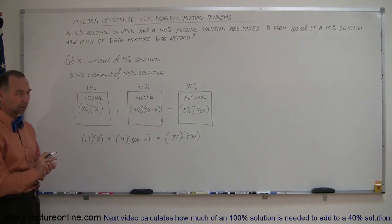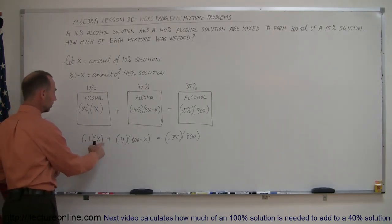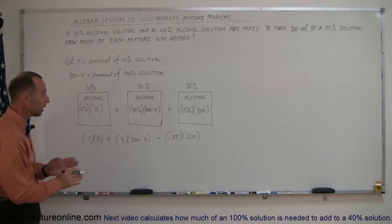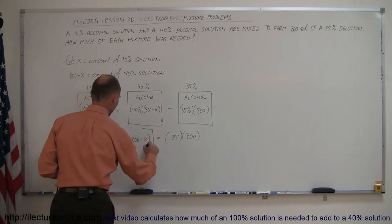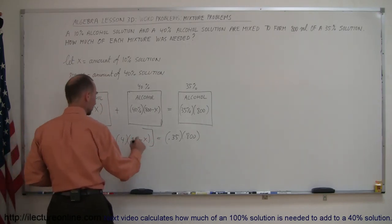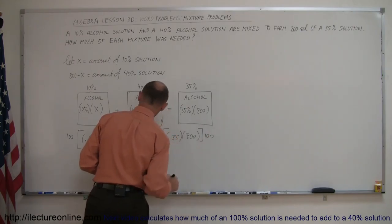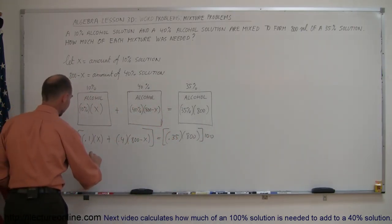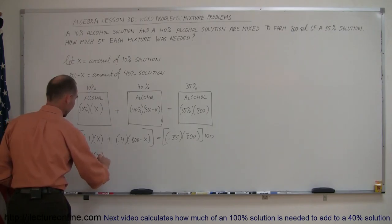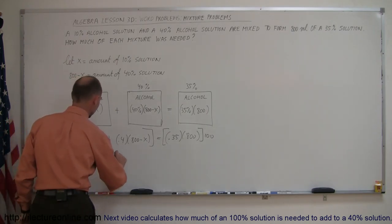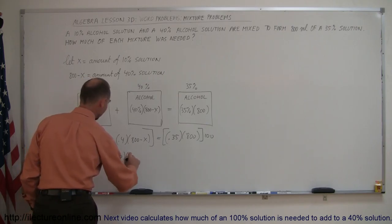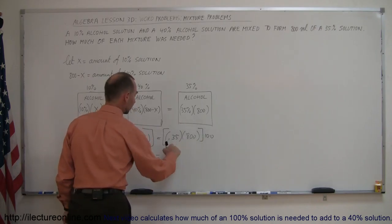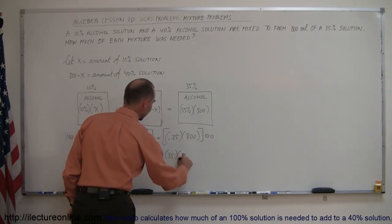First, eliminate the decimal places by multiplying both sides of the equation by 100. 100 times 0.1 gives 10, and 100 times 0.4 gives 40, so we get: 10x + 40(800 − x) = 35 × 800.